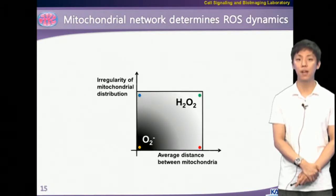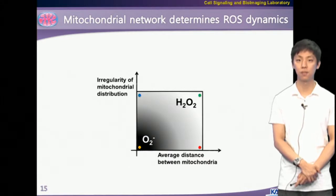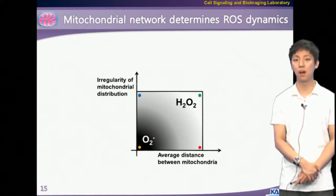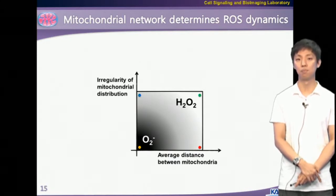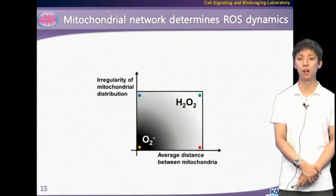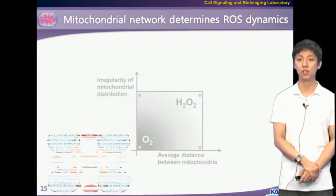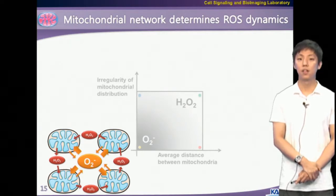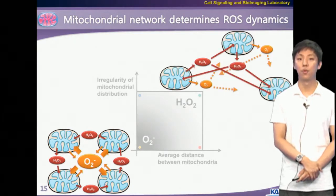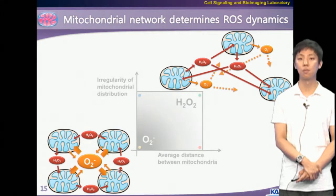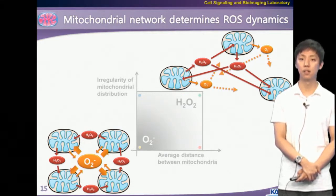Finally, a schematic diagram of main messenger ROS molecules working on mitochondria-driven ROS propagation will summarize this research. We demonstrate the cardiomyocyte model indicated by yellow spot, irregular distribution of mitochondria indicated by blue spot, and low density of mitochondria indicated by red spot. When mitochondrial distribution is regular and cytosolic density of mitochondria is high, the main messenger ROS molecules are superoxide, as shown in this figure. This is consistent with previous research on cardiomyocytes. However, when the mitochondrial distribution is irregular or cytosolic density is low, reactivity of superoxide does not reach the neighboring mitochondria. In this system, hydrogen peroxide-dependent ROS signaling occurs.